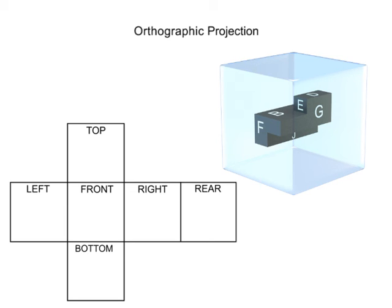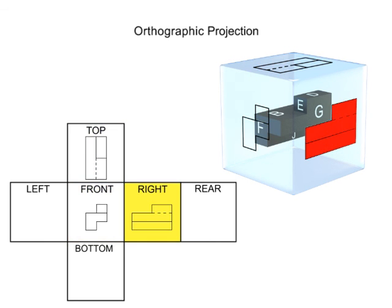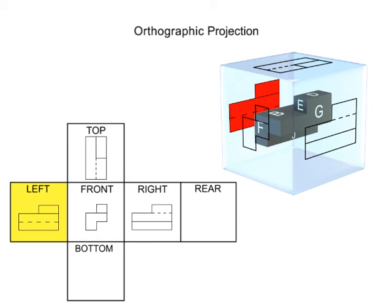The three views normally shown using the orthographic method are the top, front, and right side. Objects are typically drawn so that the most complex view is the front view, even if this does not correspond to the front of the part. If the three views are not enough to show all the details required, additional views are added until sufficient detail is shown.